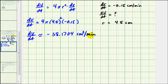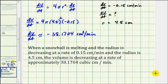Let's write a sentence to explain what this means. When a snowball is melting and the radius is decreasing at a rate of 0.15 centimeters per minute, and the radius is 4.5 centimeters, then the volume is decreasing at a rate of approximately 38.1704 cubic centimeters per minute. Notice because we stated that the volume was decreasing, we did not include the negative sign when describing the amount of decrease, even though dV/dt was negative. I hope you found this example helpful.